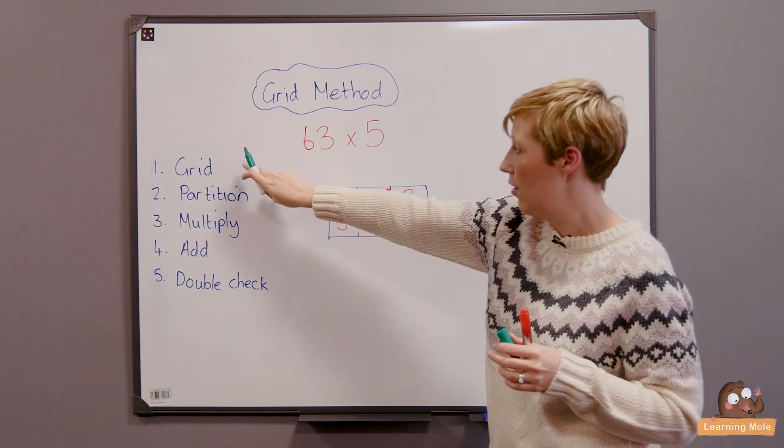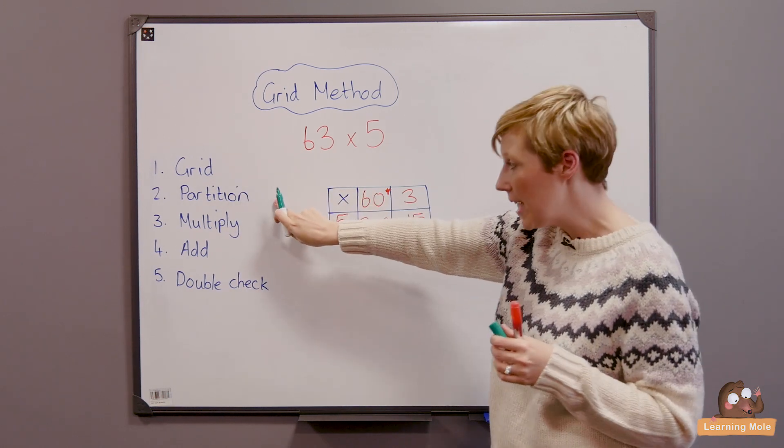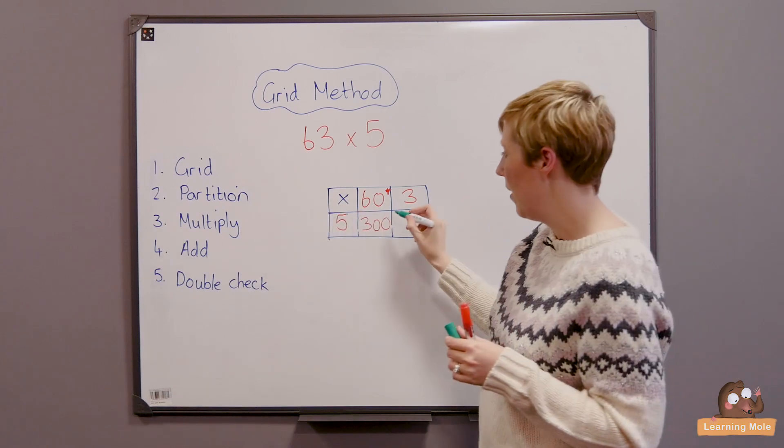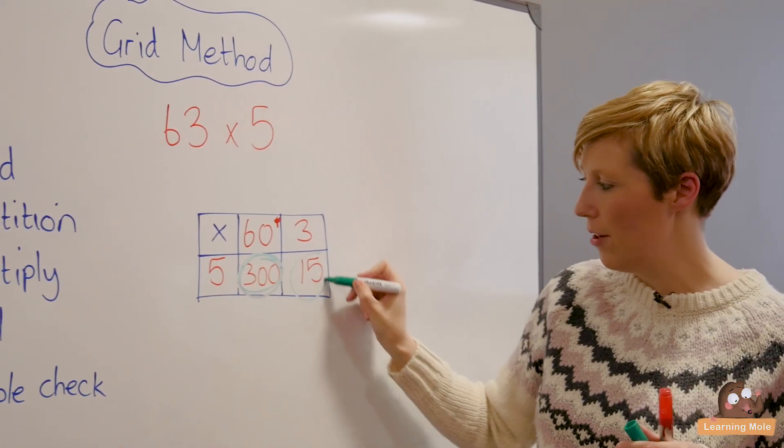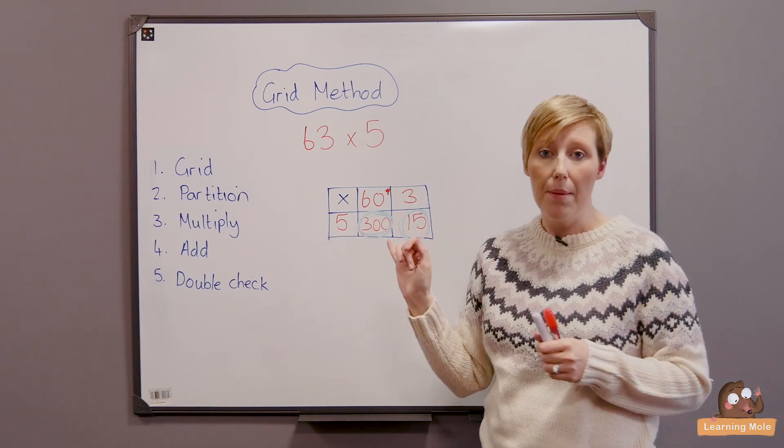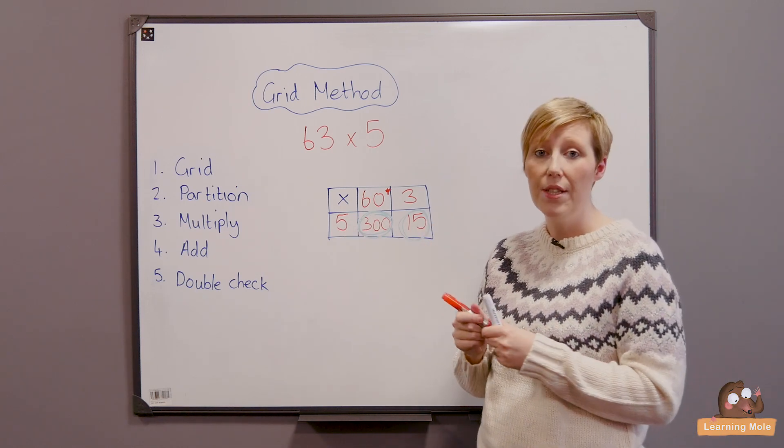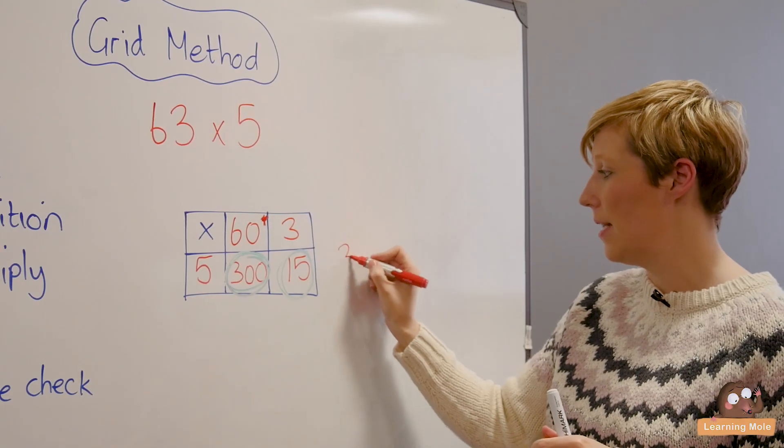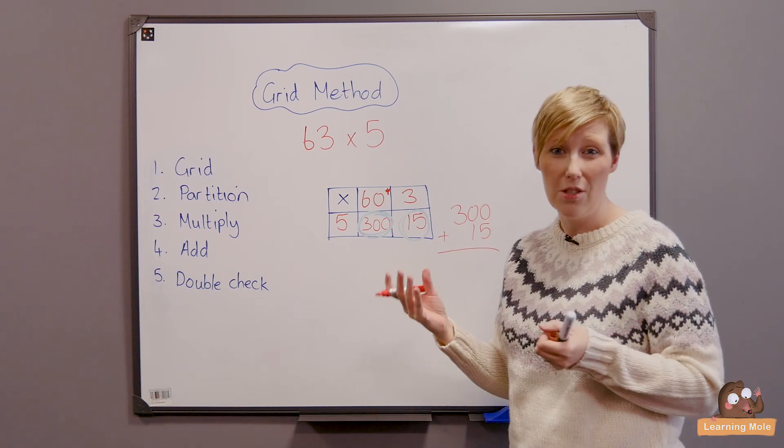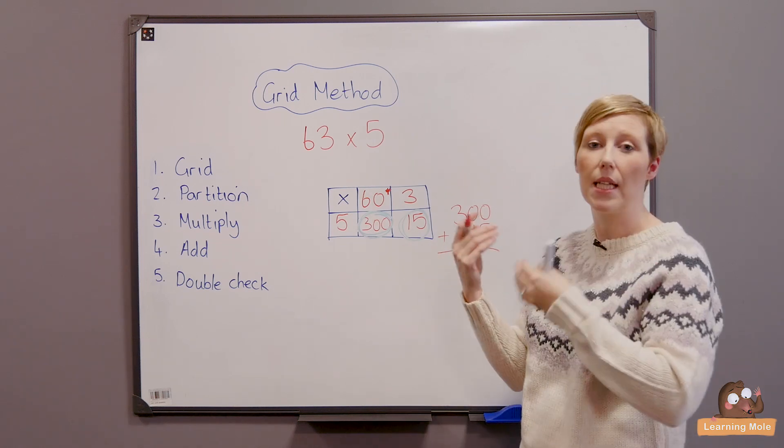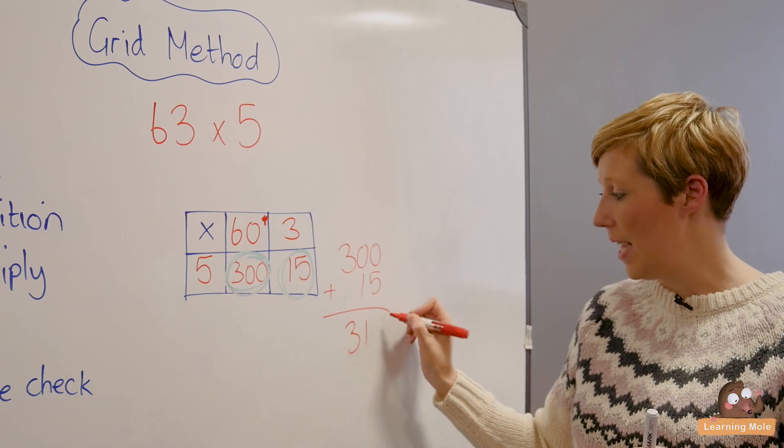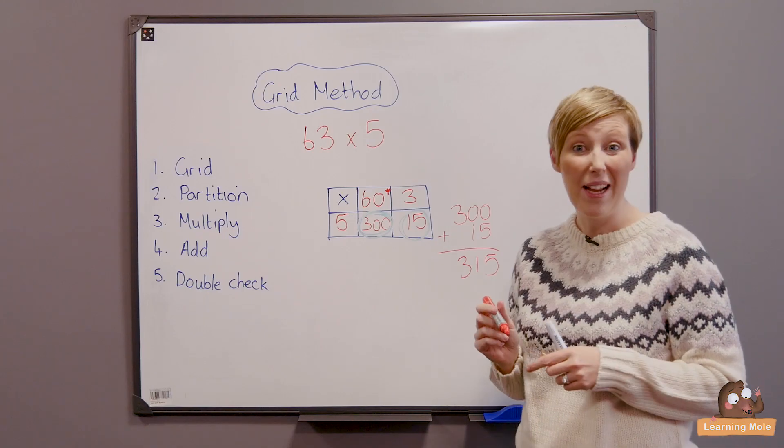So what I would say to the children, right so now you've done your grid, you've partitioned, you've multiplied, now we're going to add. And this is where I would maybe get them to highlight what are you going to add. So here are your two answers. Now mentally children should be able to do that mentally, but if they do need to write a little column addition that's equally fine. They can do that on the side and add it up if they want to. Most children won't need to for this sort of calculation, but maybe as it gets a bit trickier they will add it up. And they get their 315 and that's their answer basically.